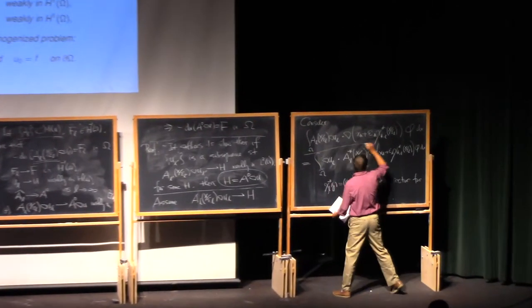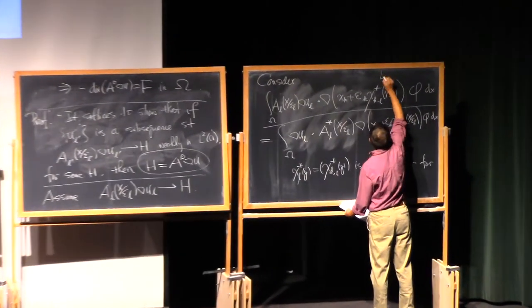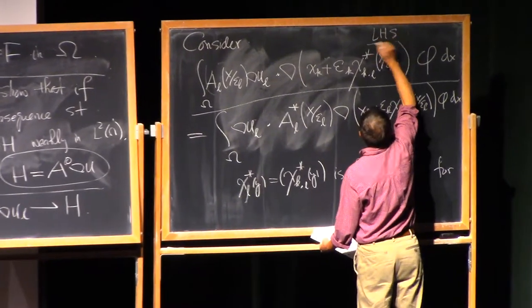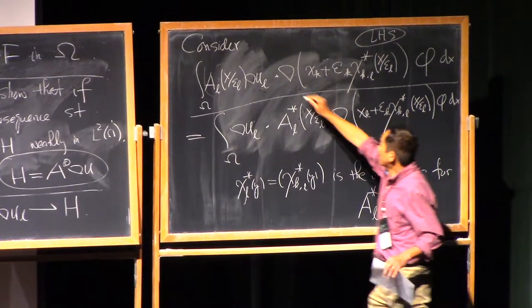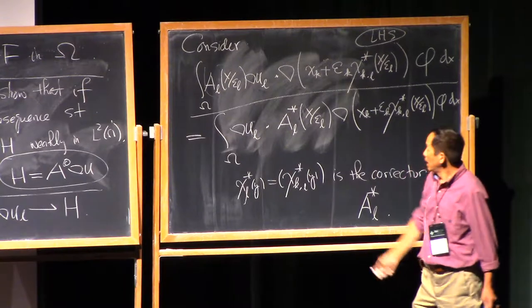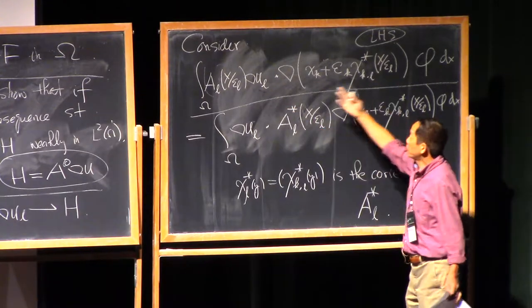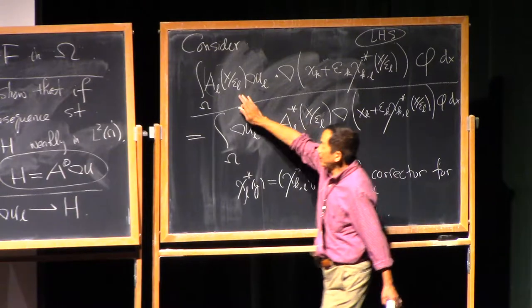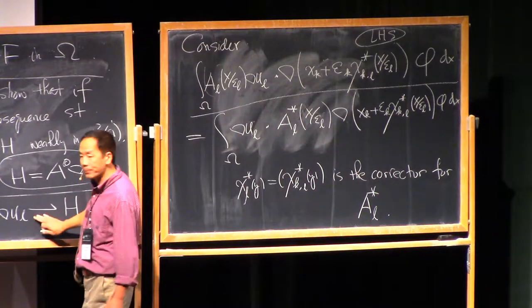First of all, let's look at the right hand, I mean the left hand side here. It's a product here. Both has weak limit. This has a limit actually by the assumption.